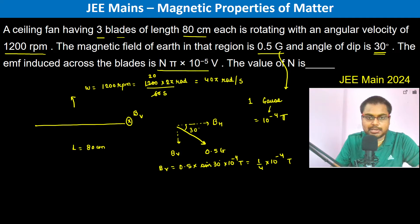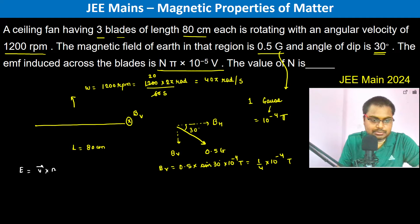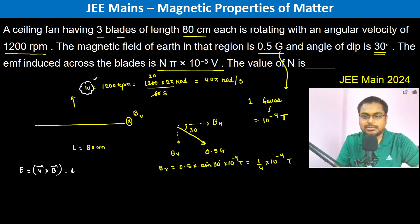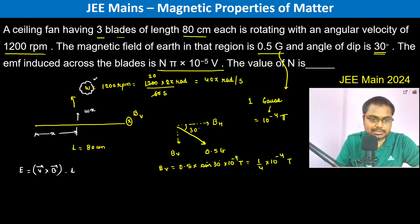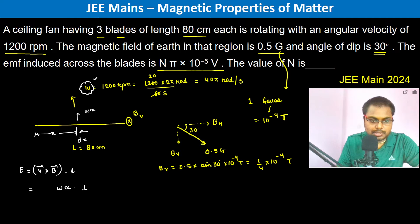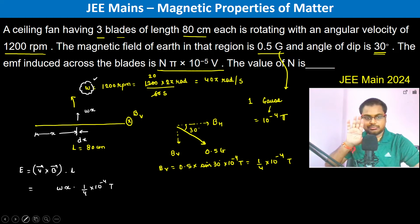The EMF induced in the blades is n pi into 10 to the power minus 5. Using the formula EMF = (v cross B) dot l, and since omega varies at each point along the blade, we take a small element at distance x, where velocity is omega times x. So the small EMF induced at that element is omega x into B_v, which is 1/4 into 10 to the power minus 4 tesla, dotted with dx.